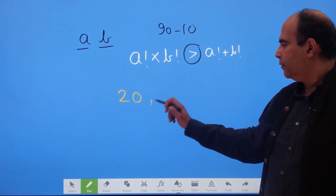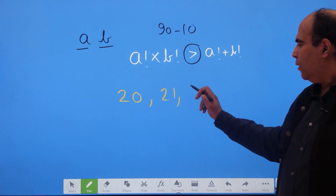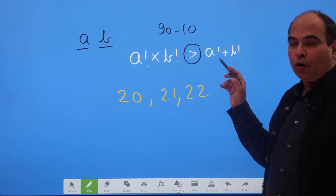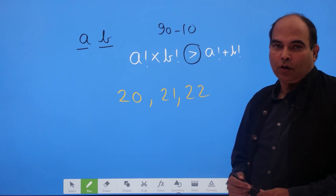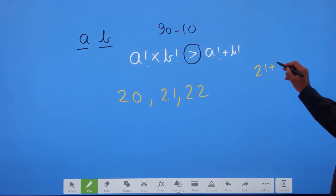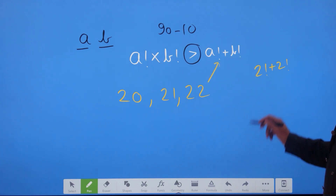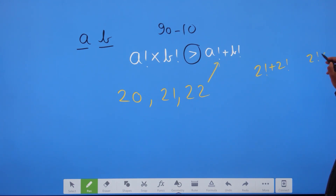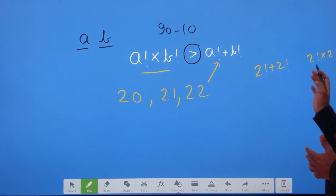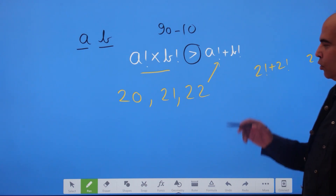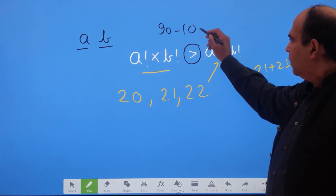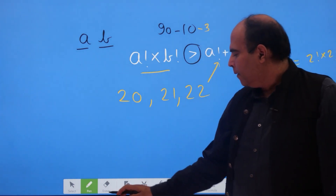When I reach the twenties, I realize that in 20, 21, and 22 — 3 numbers — the sum of factorials will be greater than or equal to the product. For 22: 2! + 2! appears on one side and 2! × 2! on the other — that's 4 = 4, so equality holds, not product greater than sum. Similarly for 20 and 21. So there are 3 more numbers in the twenties to subtract.